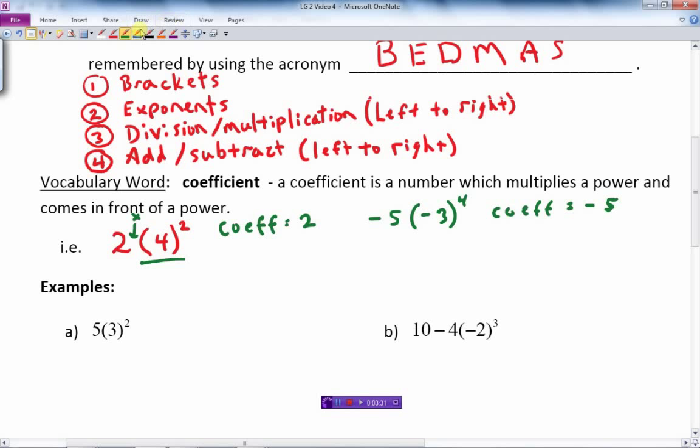One more example. Let's do 7x cubed. Well in this case here, the coefficient is multiplying the power, and the power here is x cubed. The cubed is on the x, not on the 7, and therefore the coefficient is 7.